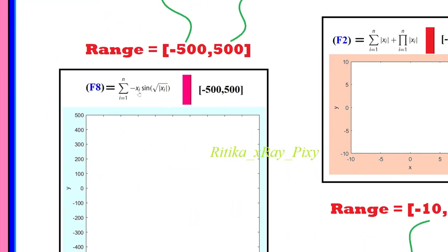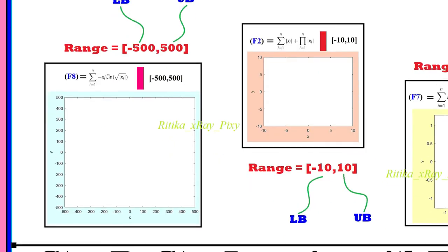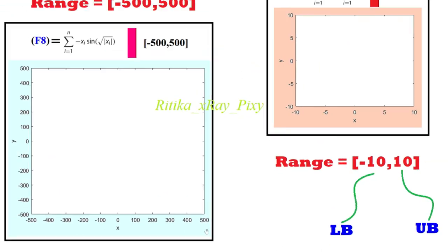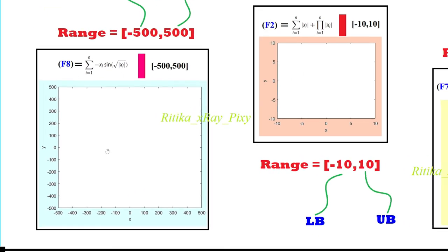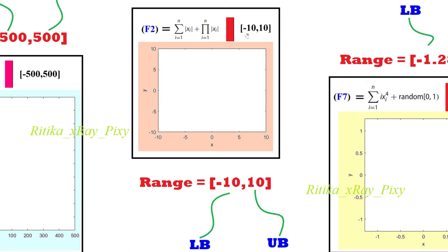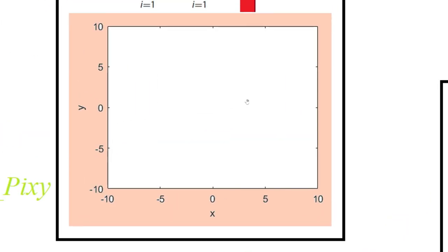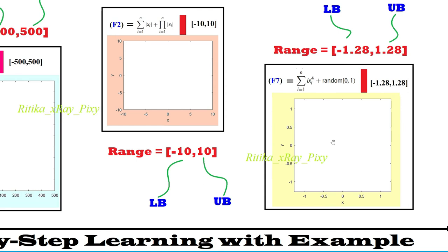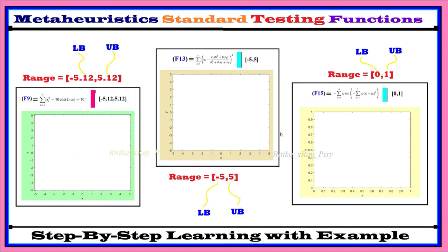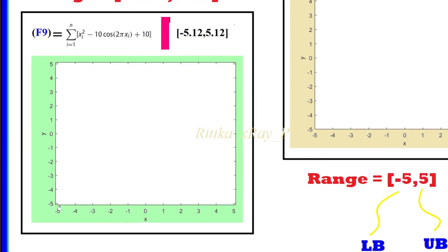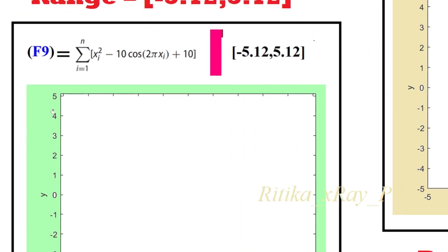You can see the search space for function F8: lower bound is minus 500, upper bound is 500. For F2, the lower bound is minus 10 and upper bound is 10. For F7, the lower bound is minus 1.28 and upper bound is 1.28. For F9, the lower bound is minus 5.12 and upper bound is 5.12.